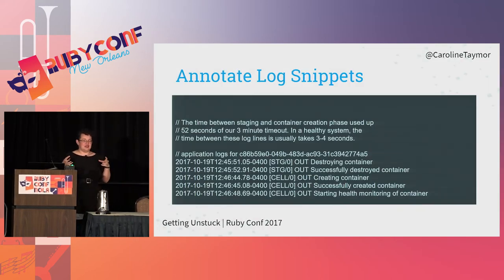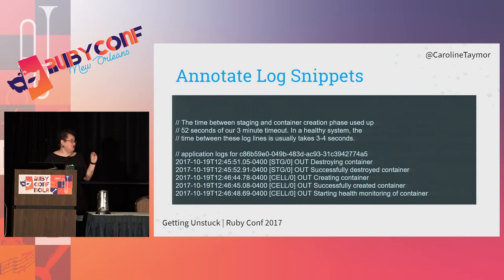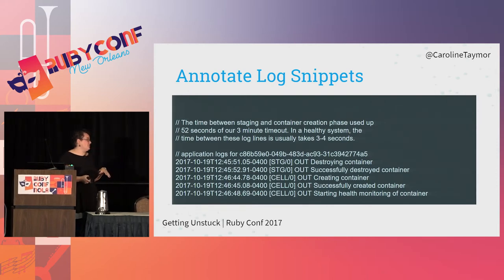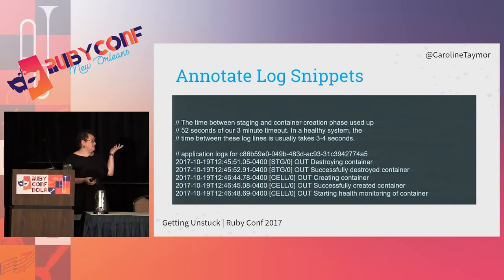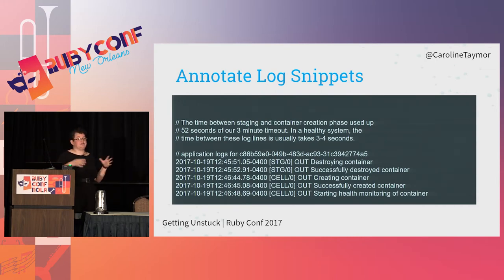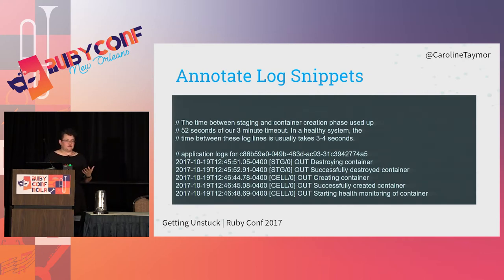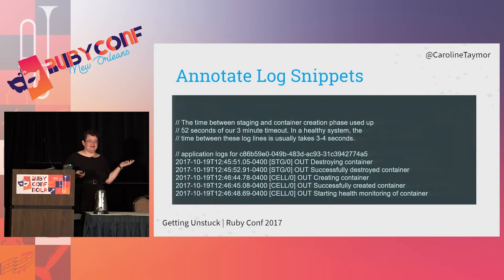One thing that's really helpful in the note-taking process is grabbing annotated log snippets. I grabbed a chunk of logs with timestamps from a system that was taking too long and timing out, and I didn't know why. I took a note: the time between the beginning of the staging process and the end of the creation phase took 52 seconds. I know I have a three-minute timeout, and in a healthy system this takes three or four seconds. If you just grab logs without annotation, tomorrow you won't know why those logs were interesting. This bug was a month ago, and I still know what it was doing because I wrote two sentences at the top.